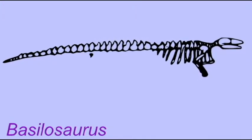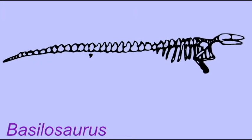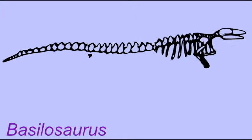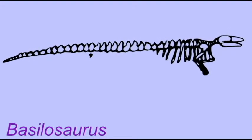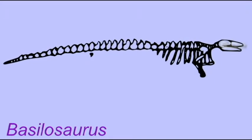The name Basilosaurus means King Lizard because its fossils, first discovered in Louisiana in the 1800s, were first thought to belong to a reptile. Sir Richard Owen attempted to change the name to Zeuglodon, but was unsuccessful.